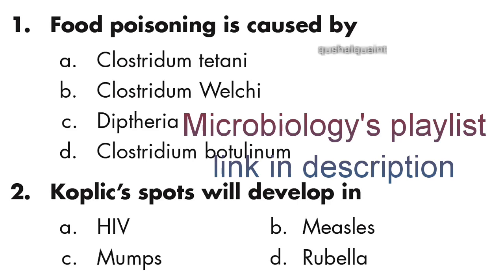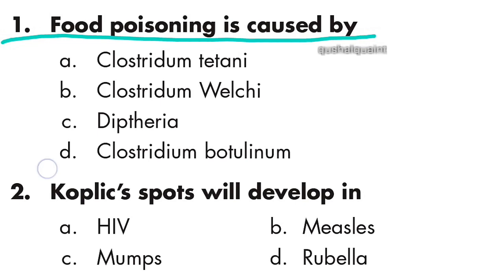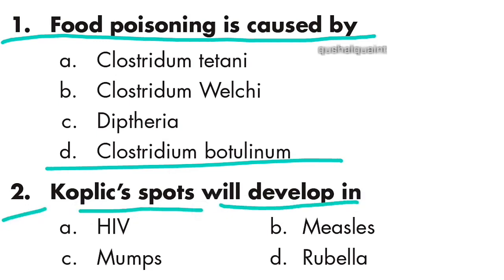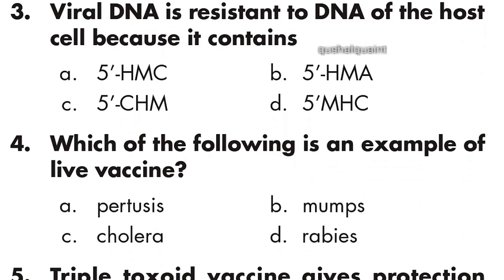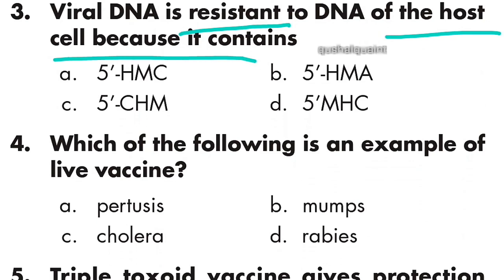Question 1: Food poisoning is caused by Clostridium botulinum. Option D is right. Question 2: Complex spots will develop in measles. Option B is right. Question 3: Viral DNA is resistant to DNA of the host cell because it contains 5-HMC (five hydroxymethyl cytosine). Option A is right.